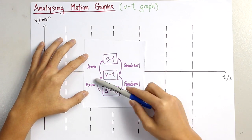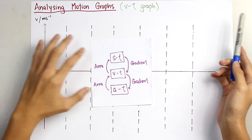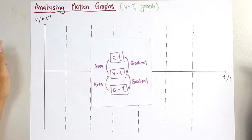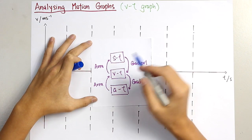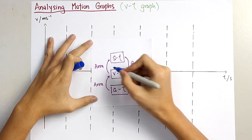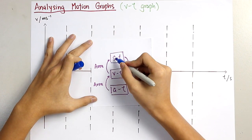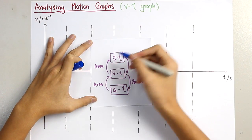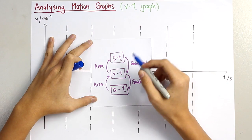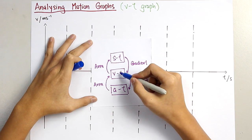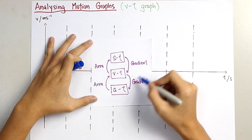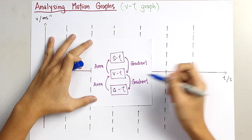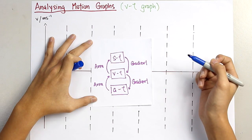Here are some important criteria that you need to know. For the VT graph, the area under the graph represents the displacement. And for the VT graph, the gradient of the graph represents the acceleration.